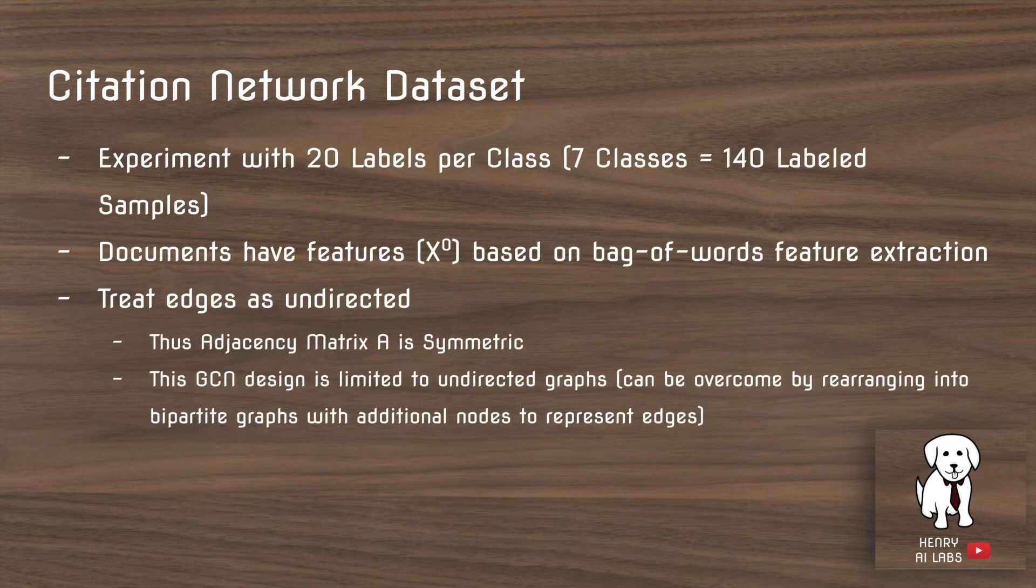So the citation network dataset that they experiment has seven different topics for papers, and then 20 papers per topic. So the documents, they start out with features x0, based on bag of words feature extraction. So we'll go back to the GCN propagation rule to understand the initial features.